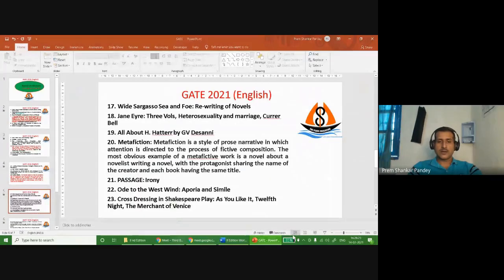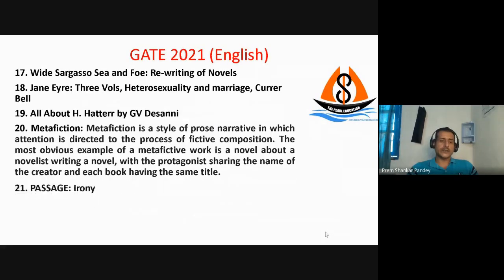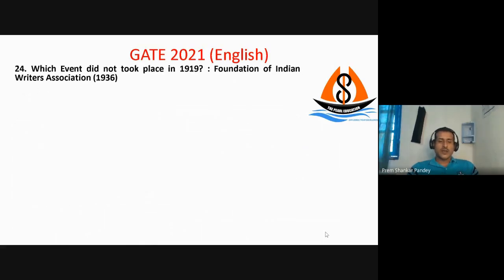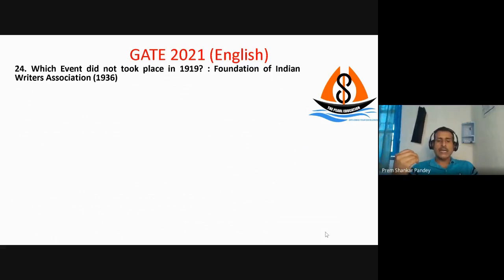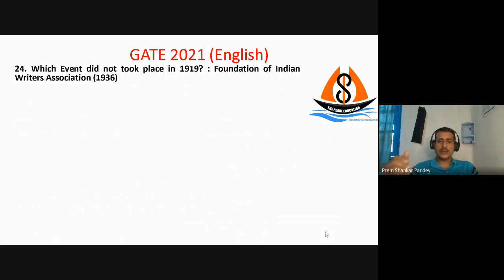After discussing 23 questions, coming to question number 24: which event did not take place in 1919? The right answer is the Foundation of the Indian Writers Association — that was in 1936. Other options included the serialization of James Joyce's Ulysses in 1919 and Rabindranath Tagore returning his Nobel laureateship. These were right options; the Indian Writers Association was the wrong one.